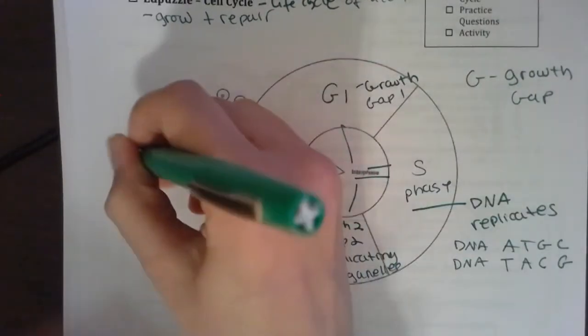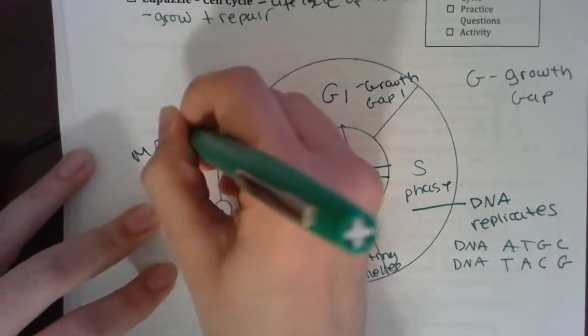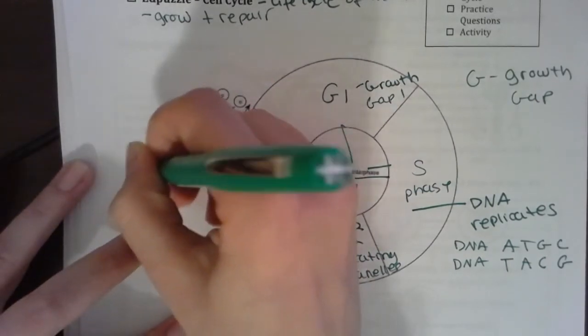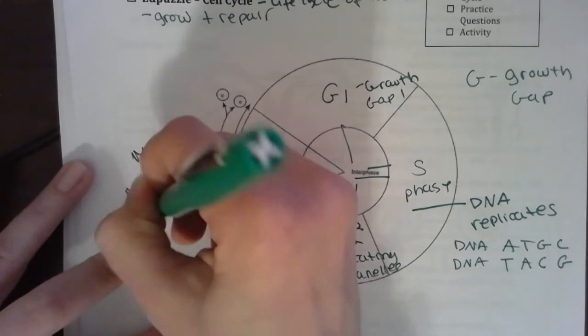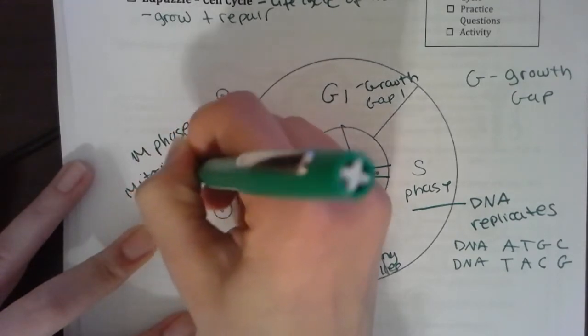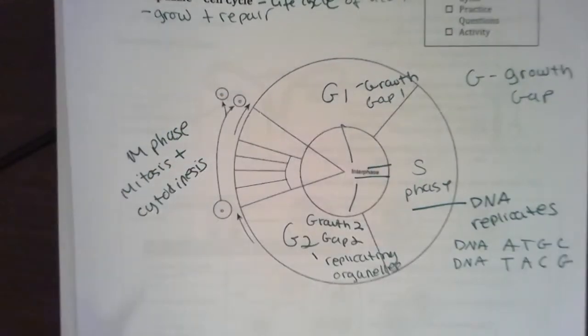Because in this phase - in this phase which is called the M phase - I'm going through mitosis and cytokinesis. I'm going to divide myself. Notice here I'm starting with one cell. By the end, I end with two.